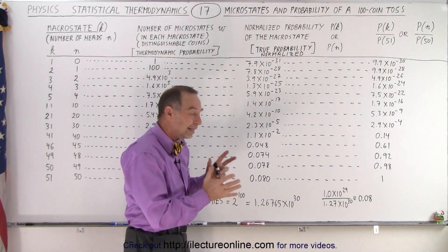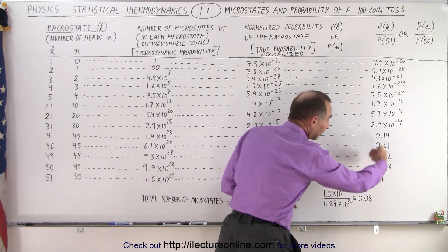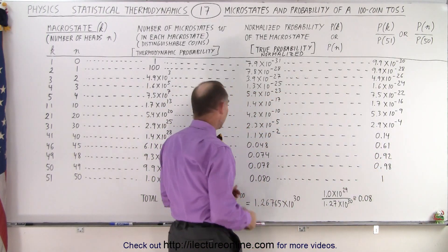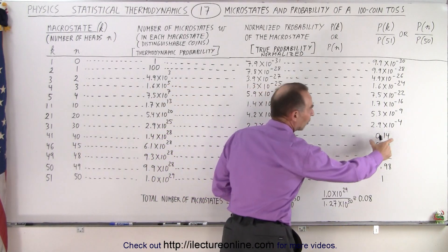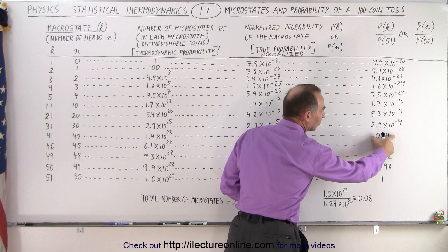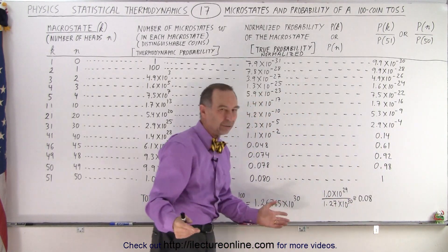So the probabilities of getting a case where it's close to 50-50, all those probabilities relative to one another are quite high. Once you start dropping down to 40 heads, then you're only down to about 14%. It's only 0.14 times as likely to get 40 heads as it is to get 50 heads. And that's what that number means.